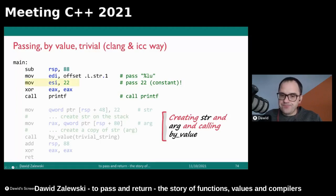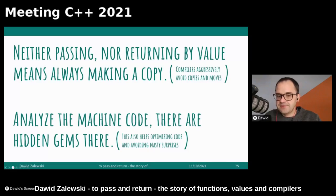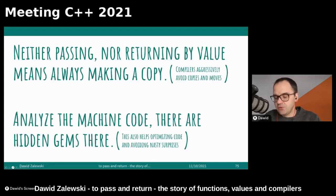So what do we learn from it? To sum it up: neither passing nor returning by value always means making a copy. Surprisingly, not even passing by value means making a copy, because compilers aggressively avoid copies and moves. When it comes to returning, it's really remarkable — I didn't expect it to happen to such an extent nowadays. Another takeaway is: instead of benchmarking, sometimes look at the machine code that's generated, because there are hidden gems there. You might get insight that sometimes just removing a line of code — like that printf statement — might save you a lot of overhead. So be careful what you're doing and in what order.